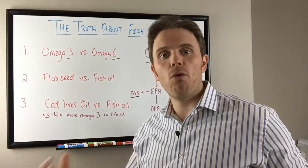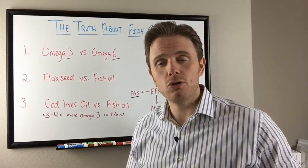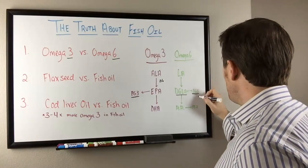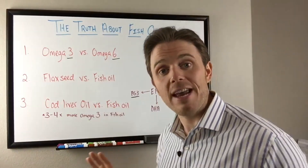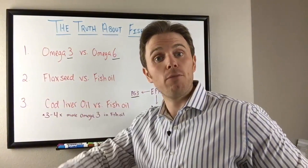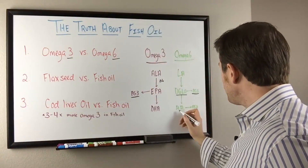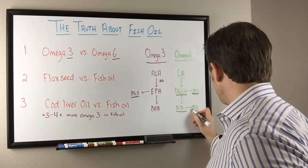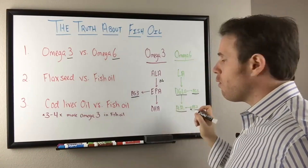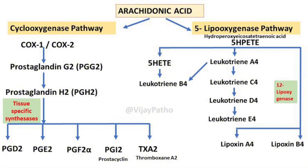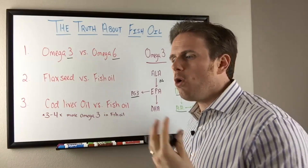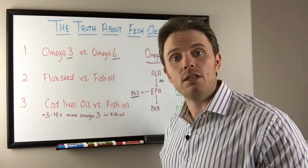These fats — evening primrose oil, borage oil, black currant seed oil — can be very helpful for females having hormone issues primarily, or skin and acne issues. Taking these fats can be very helpful and they drive the prostaglandin-1 pathway, which is another anti-inflammatory pathway. However, arachidonic acid is an inflammatory fat that can drive inflammation. It's not that arachidonic acid is bad by itself — we need arachidonic acid, it's very important to our health, and we get it from healthy quality meats as well. It's more about the ratio.